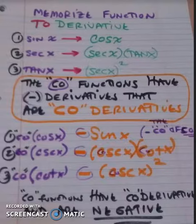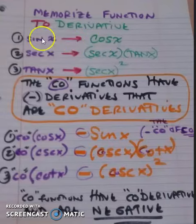You need the derivatives, otherwise we can't do integrals. So the derivative of sine is cosine. The co-function for sine is cosine.